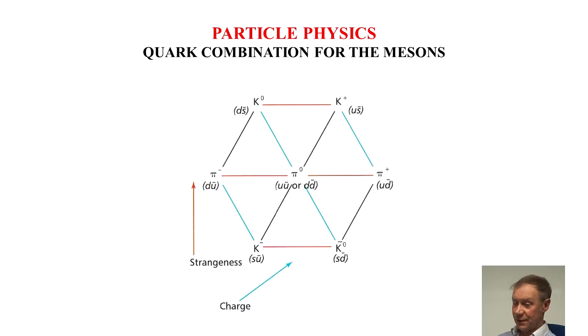The kaons at the top and bottom contain strangeness, either minus one or plus one. And as you can see, simple arithmetic enables the overall charge to be found.